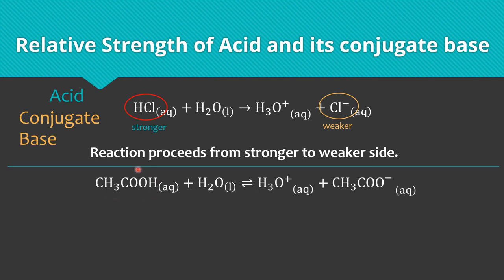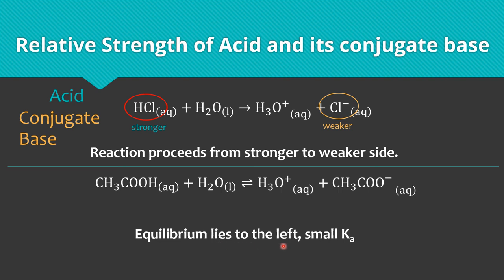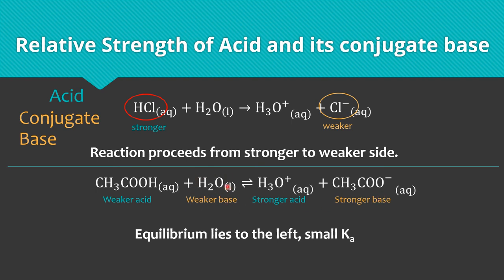For the reaction of acetic acid in water giving hydronium ion and acetate ion, we know the equilibrium lies to the left because the equilibrium constant K is small. This means hydronium ion is a stronger acid than acetic acid. Likewise, acetate ion is a stronger base than water. So the weak acid acetic acid has a stronger conjugate base than the strong acid HCl.